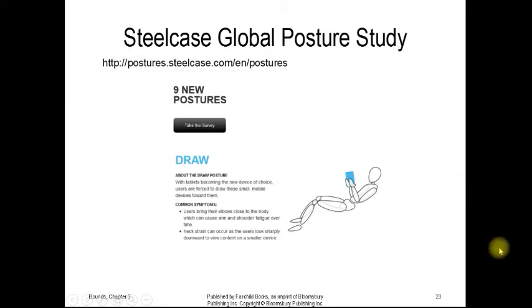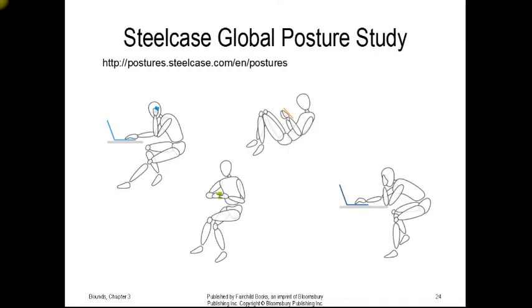Steelcase has undertaken a global posture study, because, of course, people are using different kind of devices today, such as tablets. So there's the draw posture, where people bring their elbows in close to their body, and it can cause arm and shoulder fatigue over time, and have neck strain. These are the positions that people are getting into to work with their cell phone, their iPad, again, their cell phone in a straightforward position with their arms out, which can be fatiguing, or a slumped position such as this when working on a laptop.